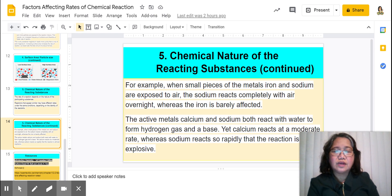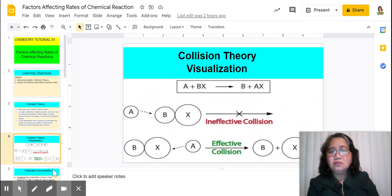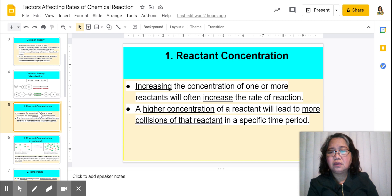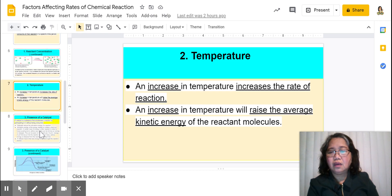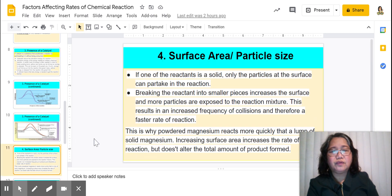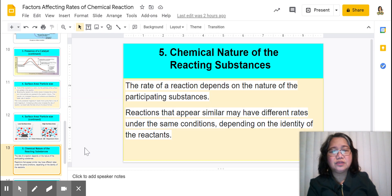So for a summary, there are five factors affecting the speed of a reaction or the rate of a reaction, and they are again: the concentration, next is temperature, the presence of a catalyst third, the fourth is surface area and particle size, and lastly we have the chemical nature of reacting substances. Thank you.